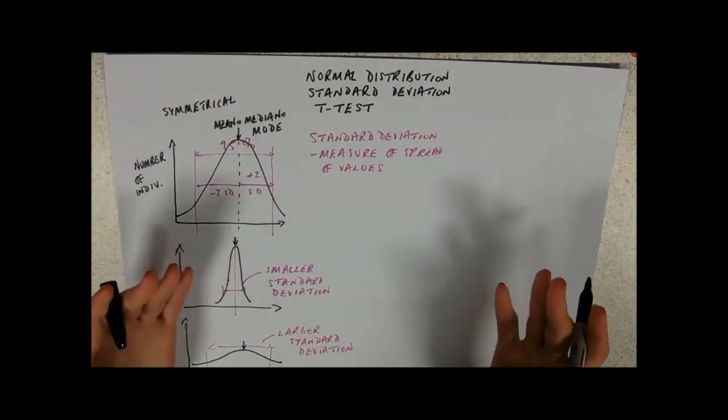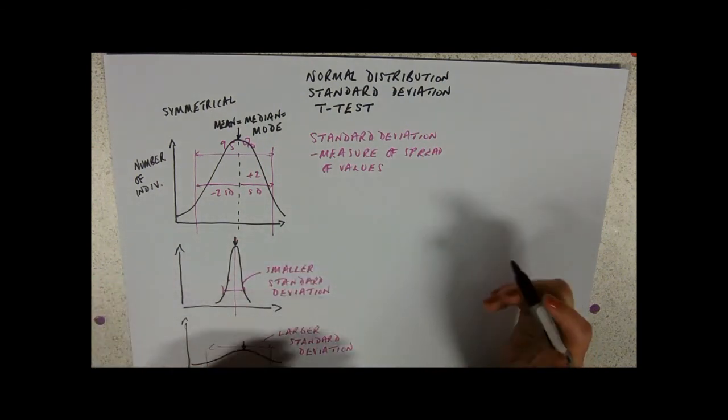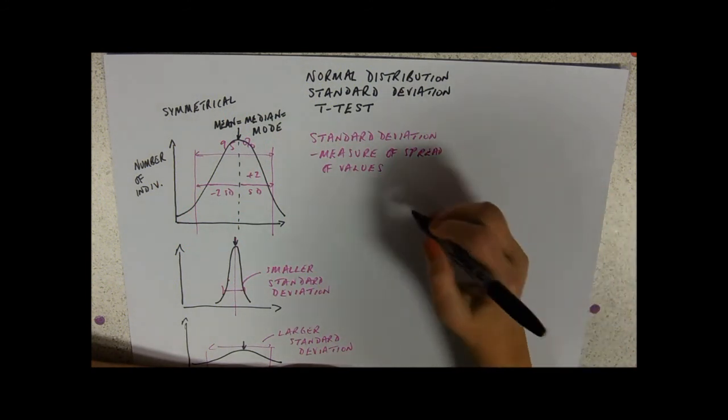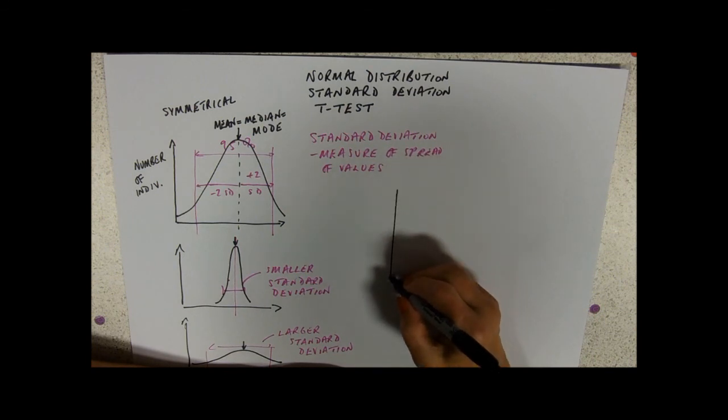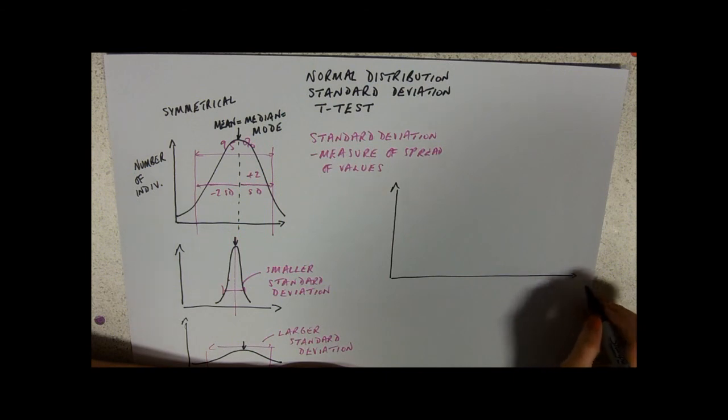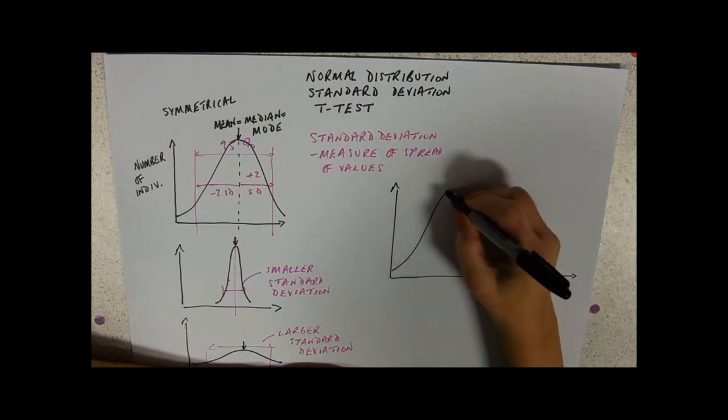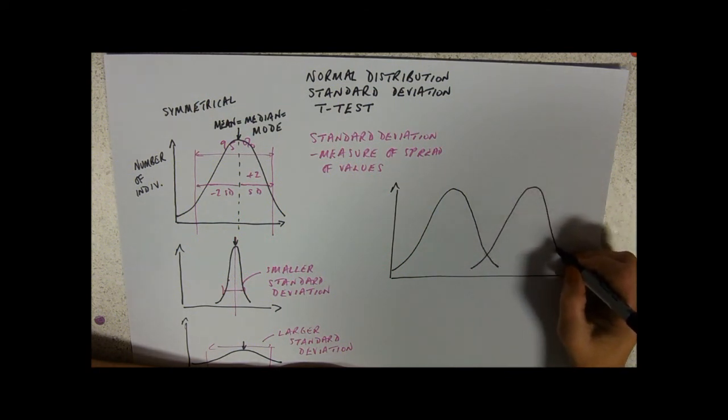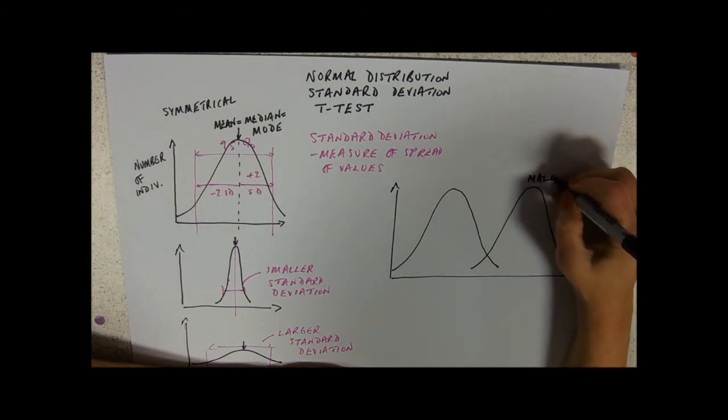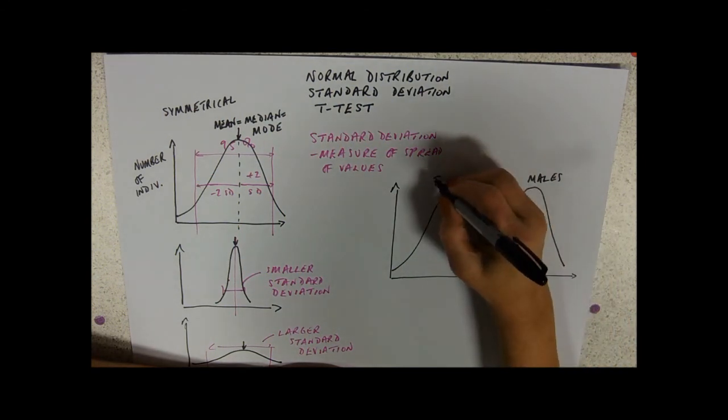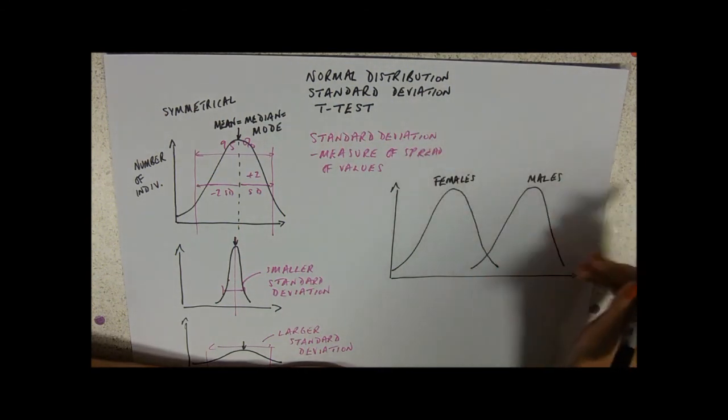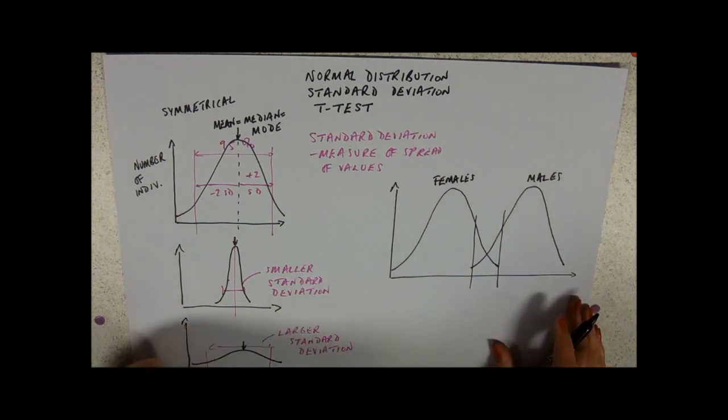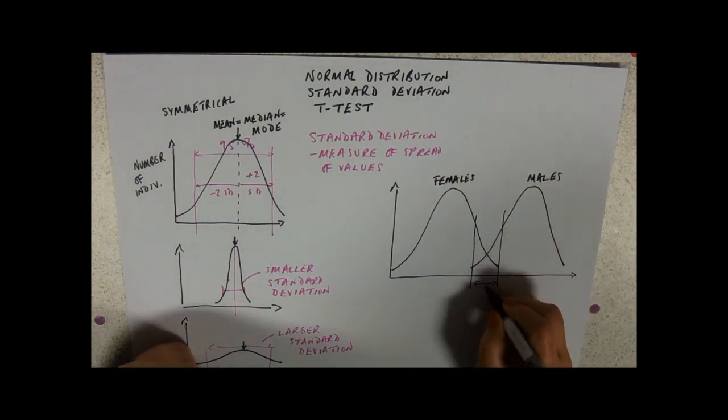In biology we're often comparing populations. For example, if you go around college and measure everybody's feet, what you notice when you plot your data into Excel is that you appear to have two normal distributions - one for males because a lot of them have bigger feet, and one for females. You've got two humps, two normal distributions, and then here you've got your region of overlap. What you need to know is: is that overlap significant?